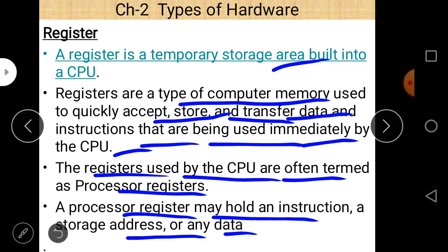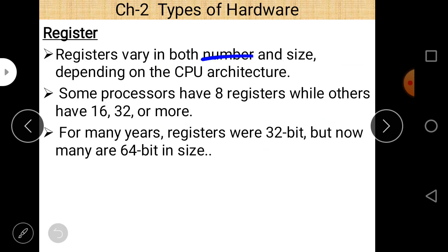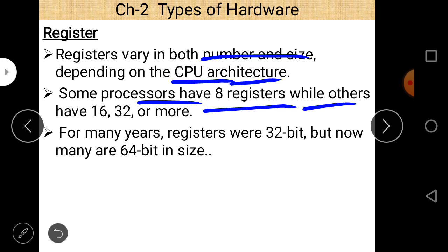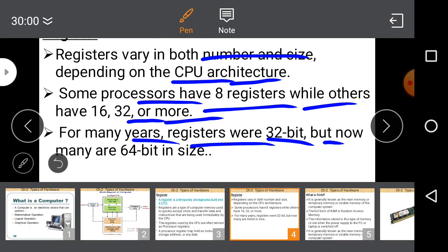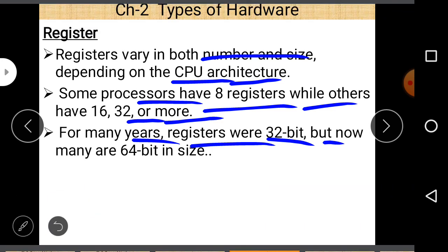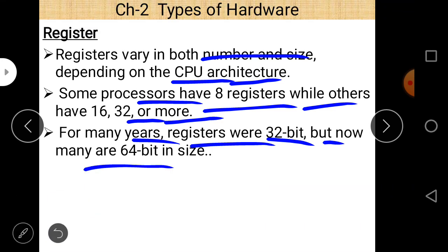Registers vary in both numbers and size depending on the CPU architecture. Some processors have 8 registers while others have 16, 32, or more. For many years registers were 32-bit, but now many are 64-bit in size.